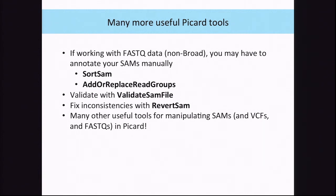There are also many other Picard tools. If you're working with FASTQ data instead of unmapped SAMs from base calls, there are separate programs to handle that. You can convert between FASTQ and unmapped SAM, sort SAMs by read name or genomic coordinate, add metadata with programs like AddOrReplaceReadGroups, validate whether a SAM file conforms to proper format, and use a program called RevertSam to remove undesirable things from the SAM file. Picard handles SAMs, VCFs, and FASTQs. We're also merging user support for Picard and GATK, so posting on the GATK forum about Picard will get you useful answers.